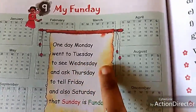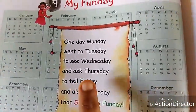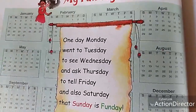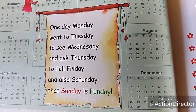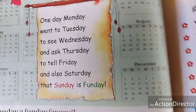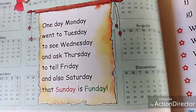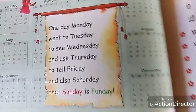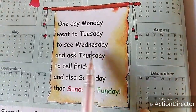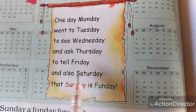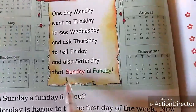Look here. One day Monday went to Tuesday to see Wednesday. And ask Thursday till Friday. And also Saturday — that Sunday is fun day. Sunday means that is a holiday for us. So Sunday we will enjoy in our home. So Sunday is our fun day.